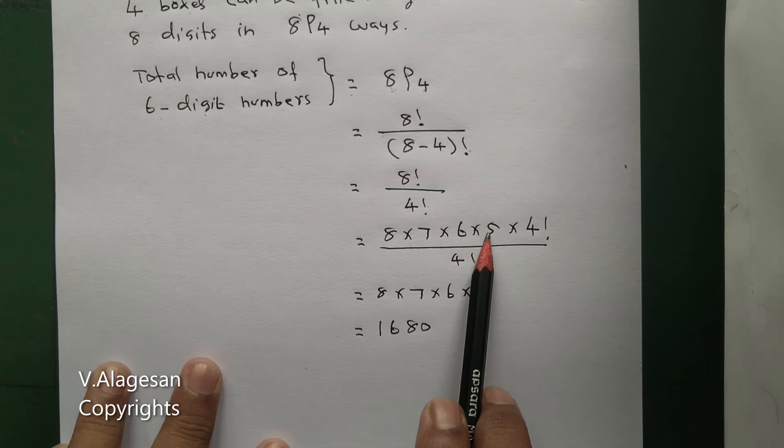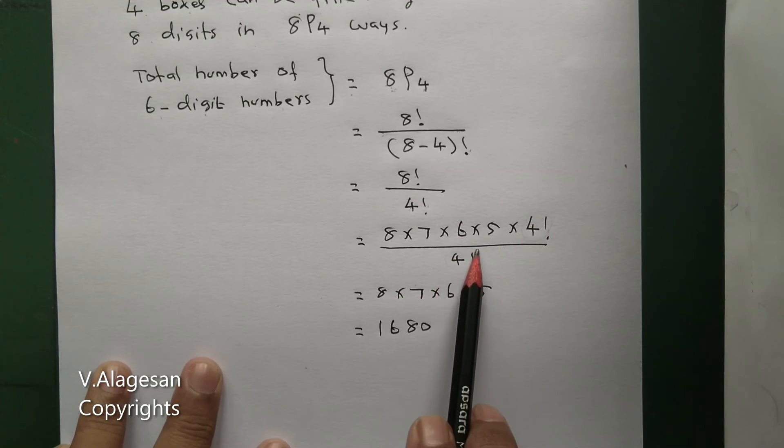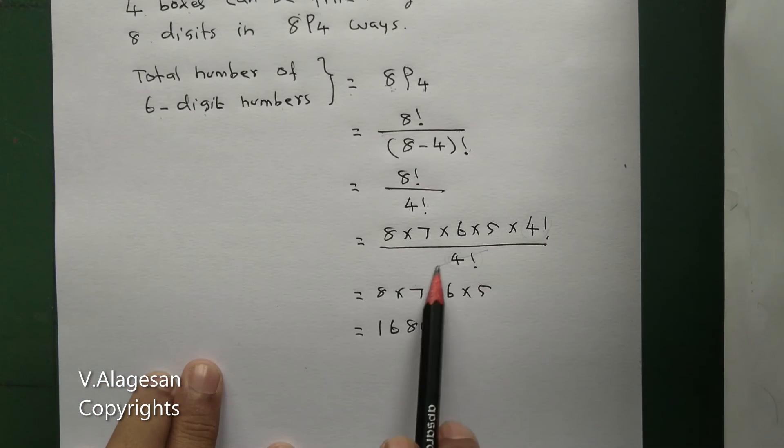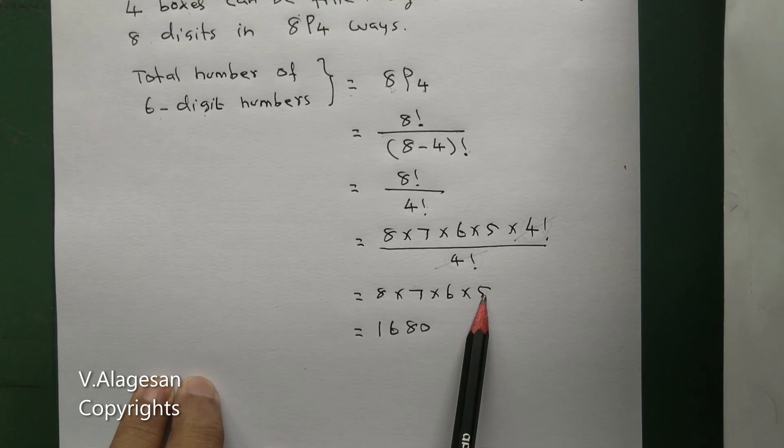4 factorial in denominator, 4 factorial in numerator. 4 factorial cancels, so we get 8 × 7 × 6 × 5. Multiply, we get...